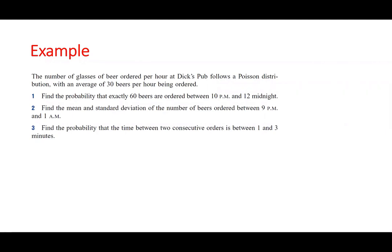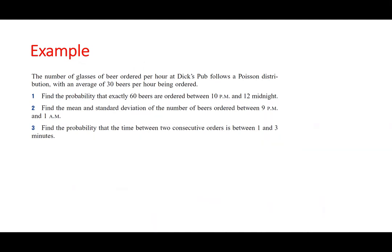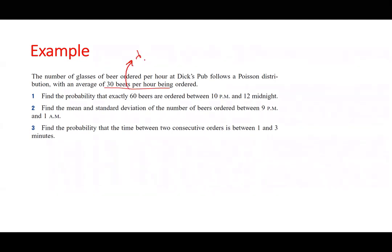Let's solve an example. The number of glasses of beer ordered per hour at Dick's pub follows a Poisson distribution with an average of 30 beers per hour being ordered. First of all, what is lambda? Lambda is the number of orders, number of customers, and it is 30 beers — so that's just lambda. Pay attention: per hour, so our time unit is hour.